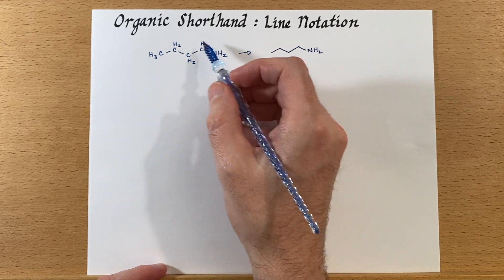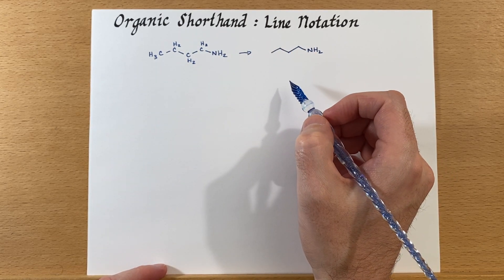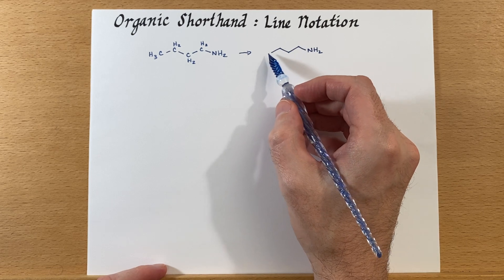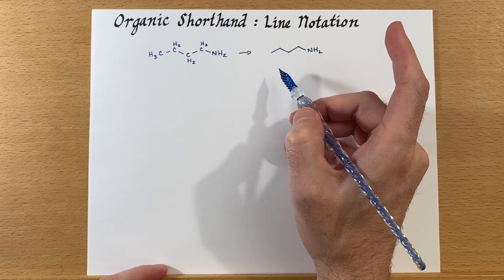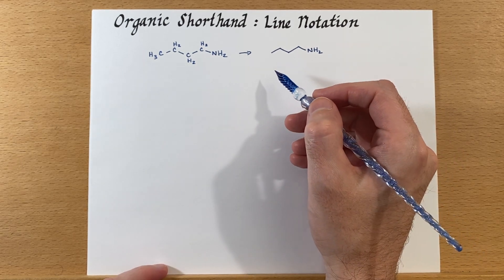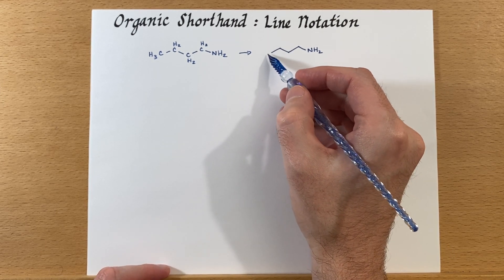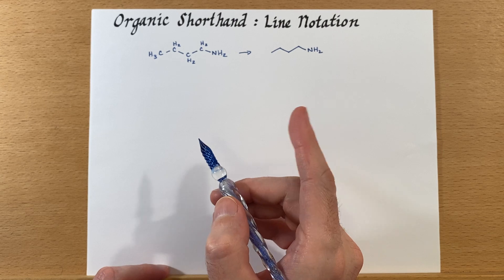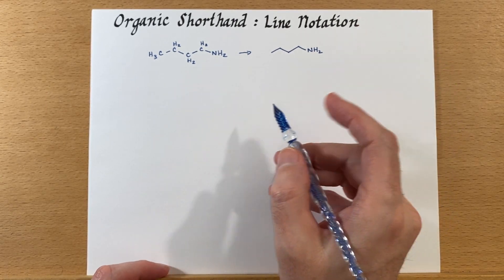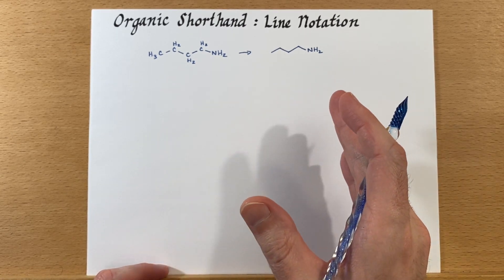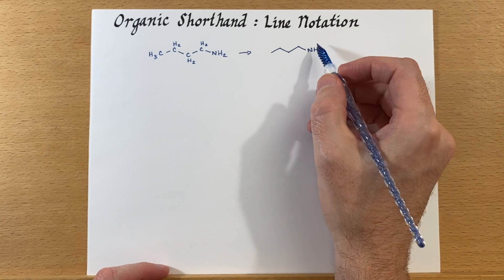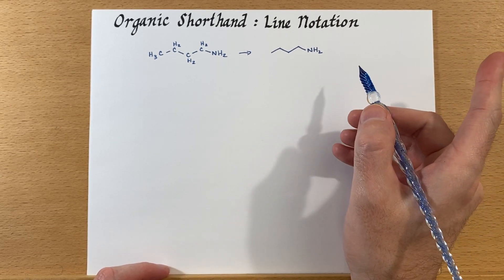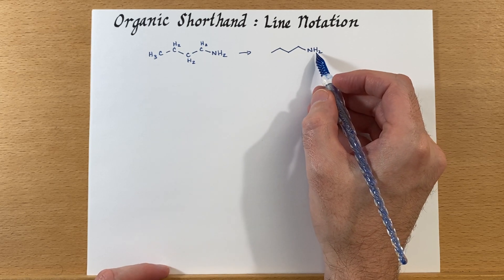What does this mean and how is it condensed into line notation? At each point where the line changes direction, there is a carbon. We know carbon needs four bonds, so if a carbon only has one bond shown, there must be three hydrogens on it because we didn't draw anything else. We always draw non-hydrogen and non-carbon atoms, so nitrogen gets drawn. We also draw hydrogens attached to non-carbon atoms, like the two hydrogens attached to nitrogen.